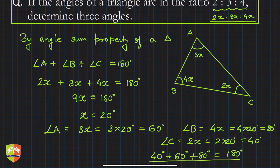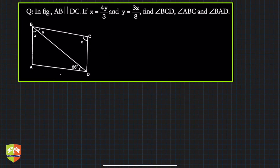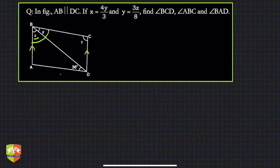Here is another problem. AB is parallel to DC, x = 4y/3, and y = 3z/8. From the figure, x and y are marked angles, and z is another angle. We need to find angles BCD, ABC, and BAD. Angle ADB is given as 36 degrees.